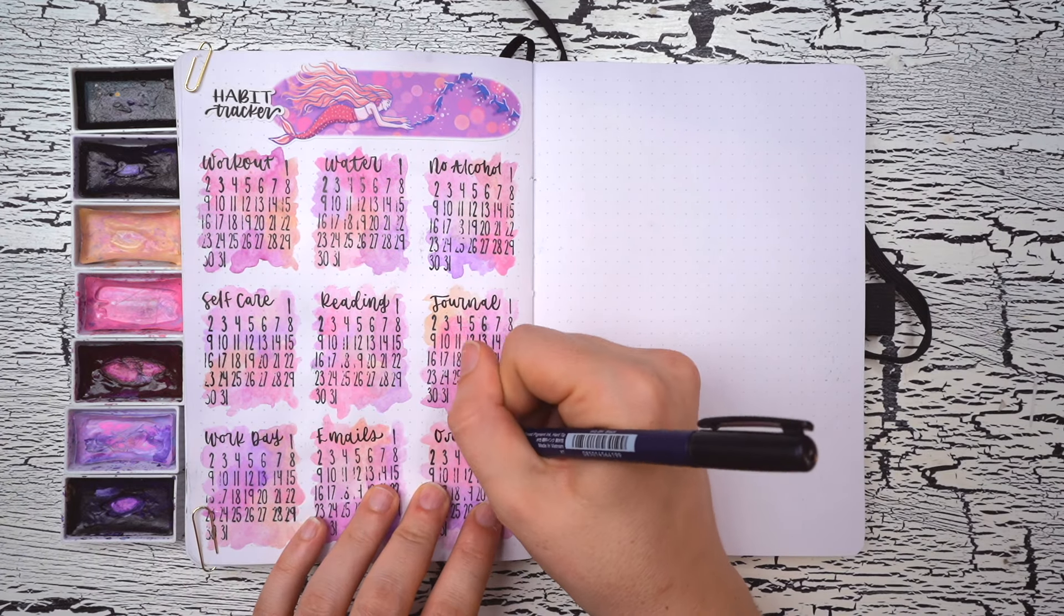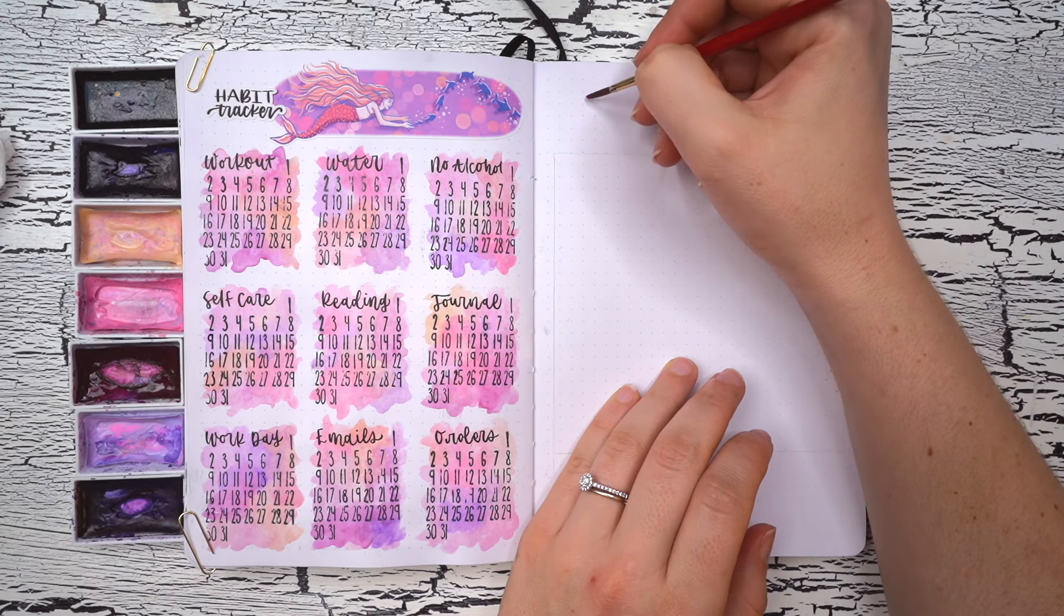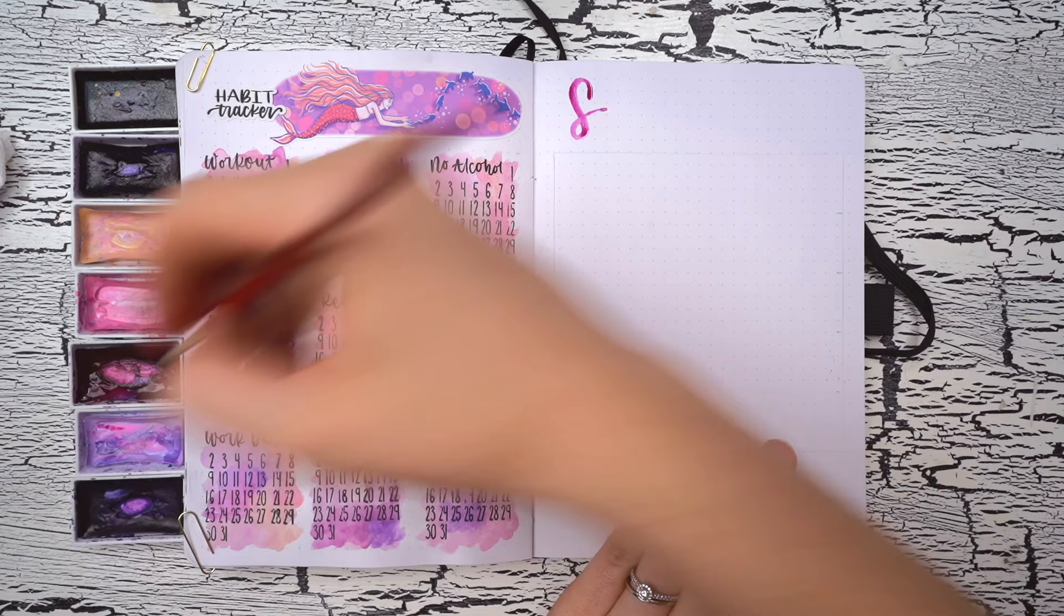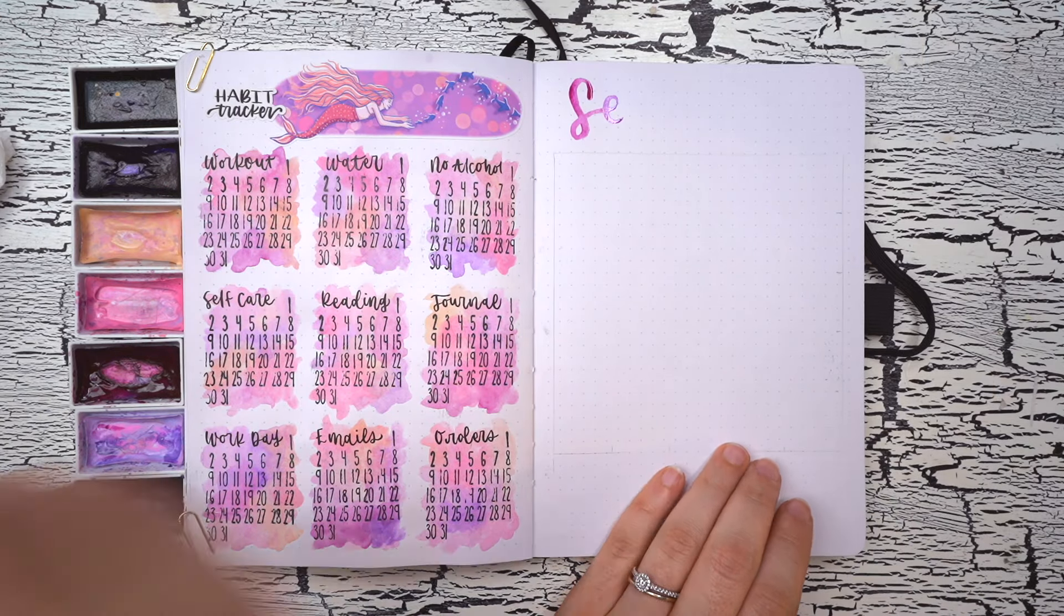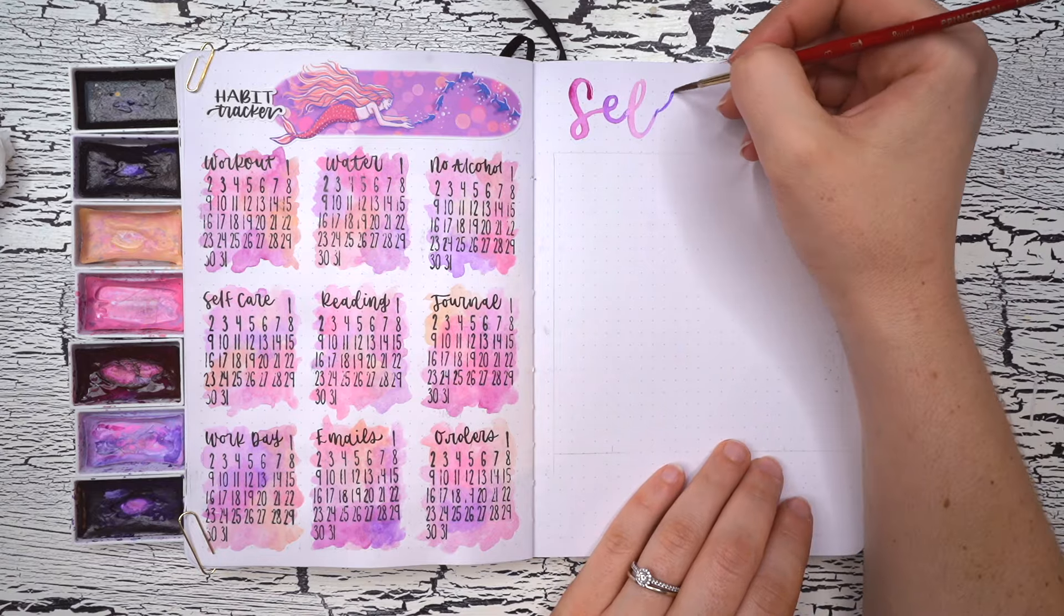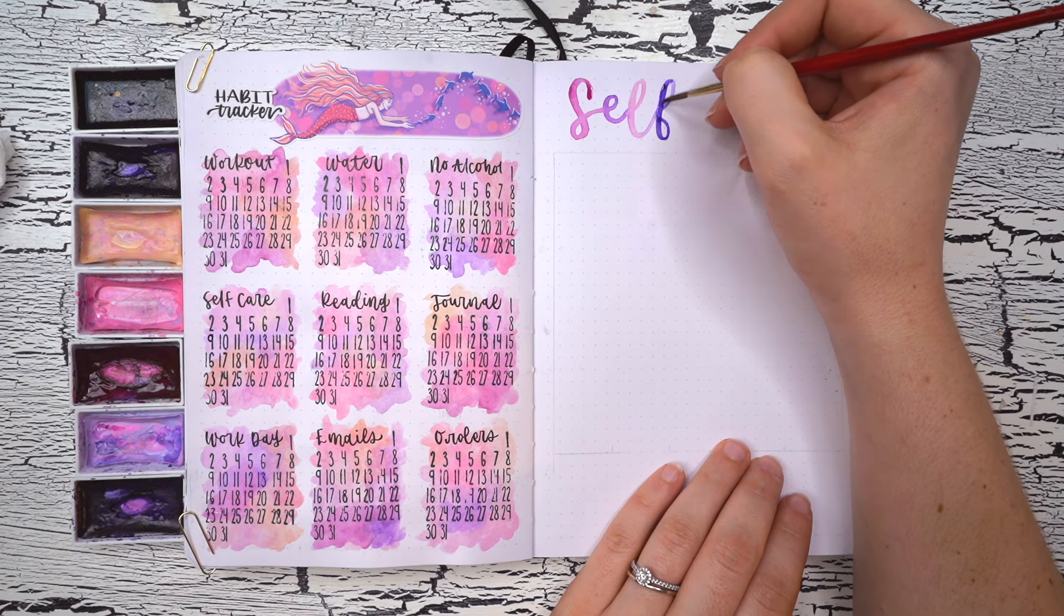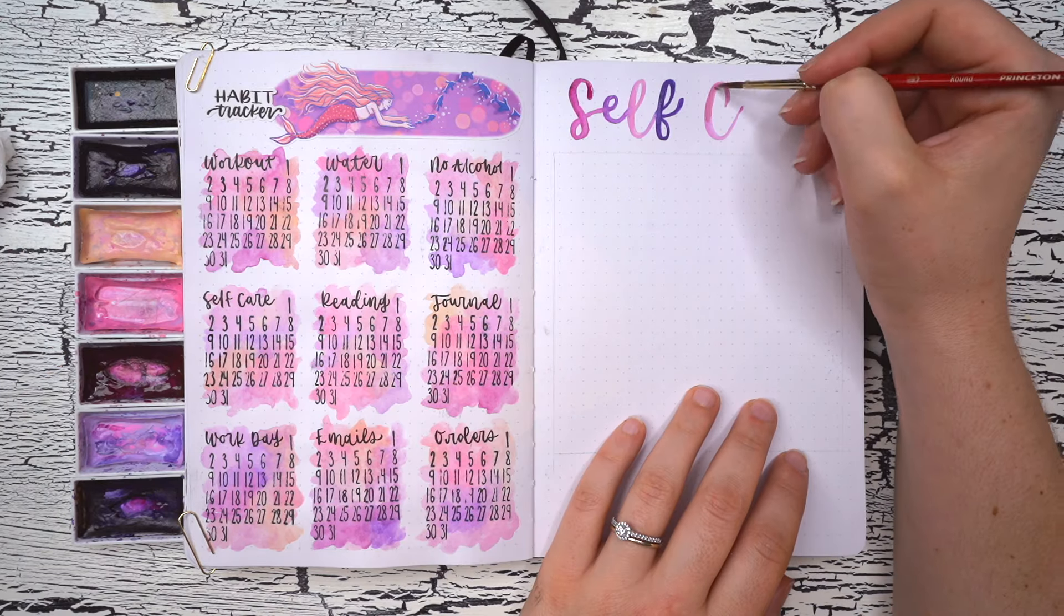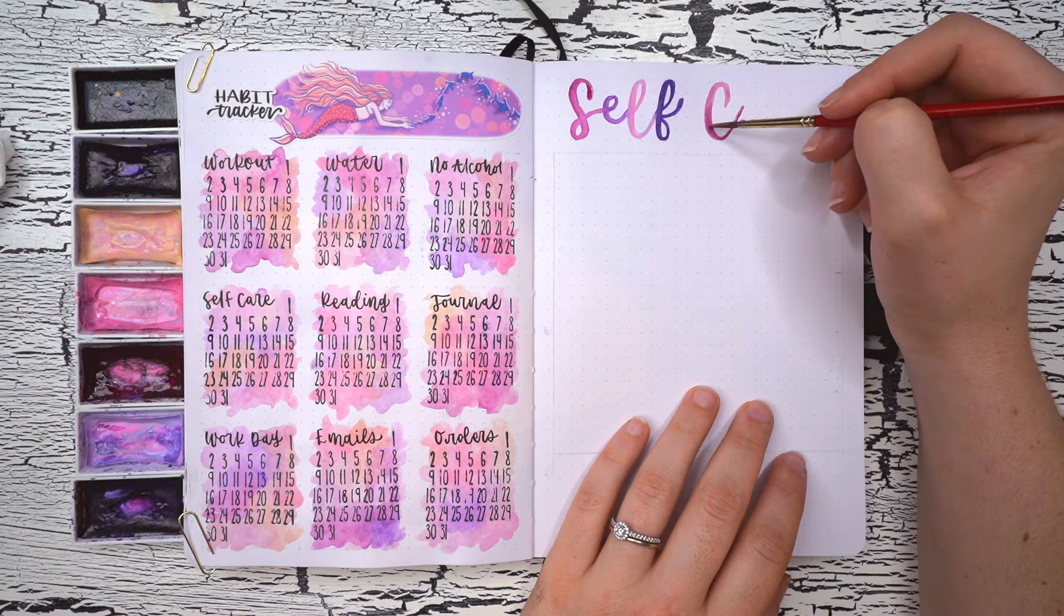The habits that I'm going to be focusing on in May are working out, drinking water, and not drinking alcohol, a tracker for checking in with my self-care tracker, which I'll be making next, a reading tracker, and one for my journaling. And lastly, I have three professional habits, which is marking off when I have a workday, when I answer my emails, and when I ship out shop orders.